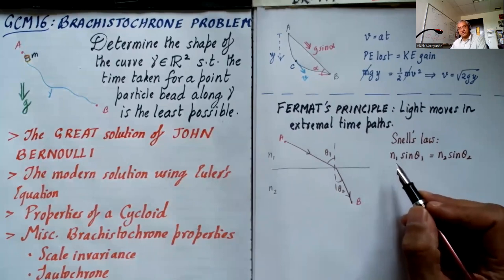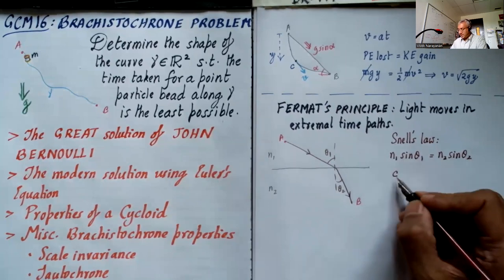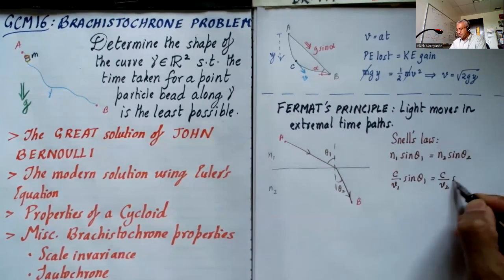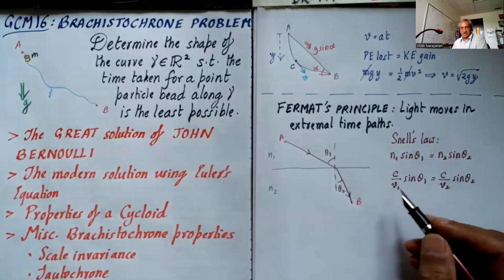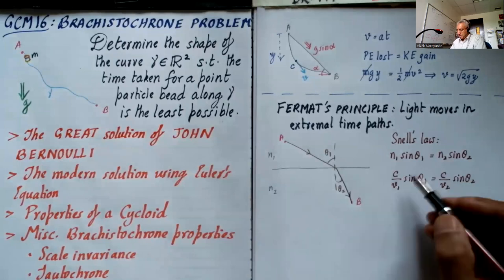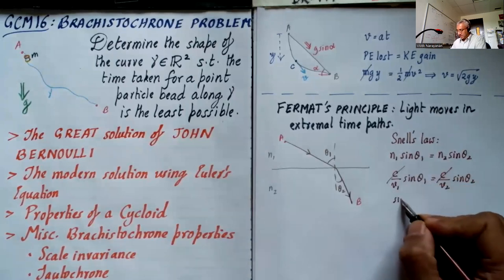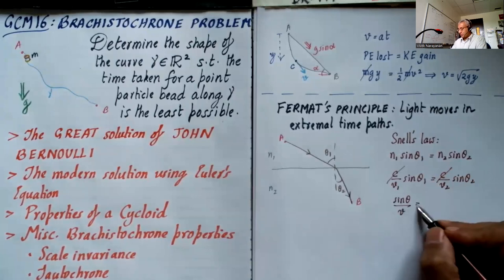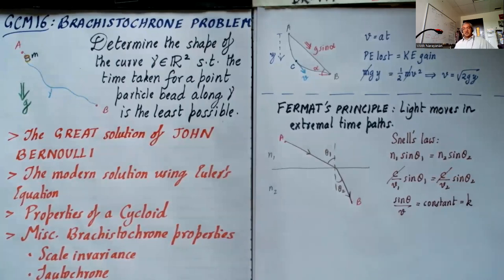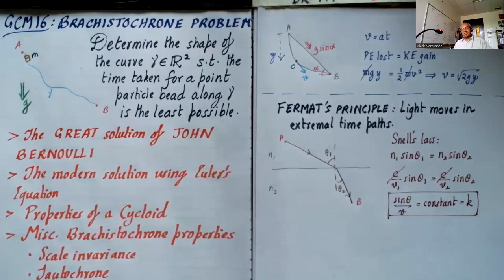The refractive index of a material is defined as the ratio of the speed of light in vacuum to the speed in the material: c/v₁ sin θ₁ = c/v₂ sin θ₂. I like this definition because it shows the refractive index must always be greater than one, since the speed of light in vacuum cannot be exceeded. The c cancels out, and we can write sin θ / v = constant, which I'll call k.